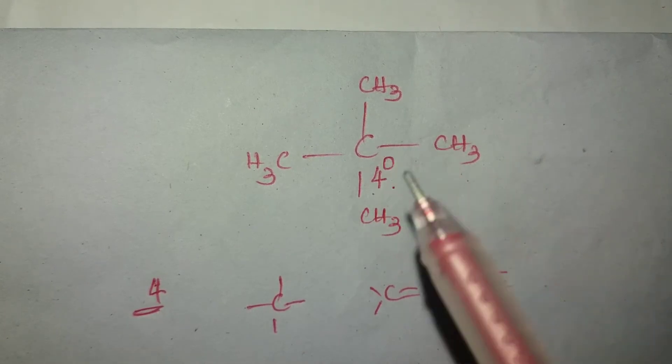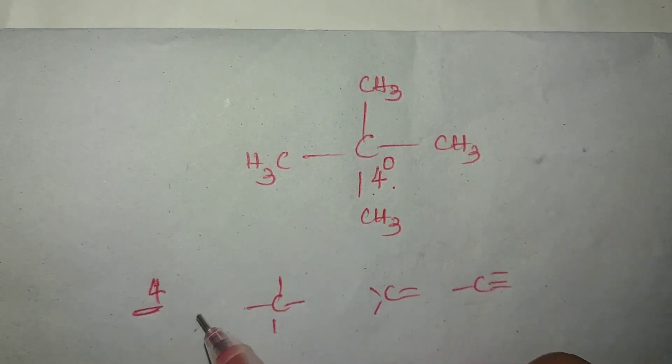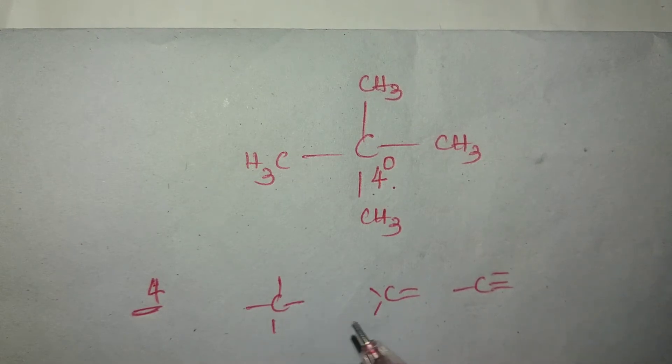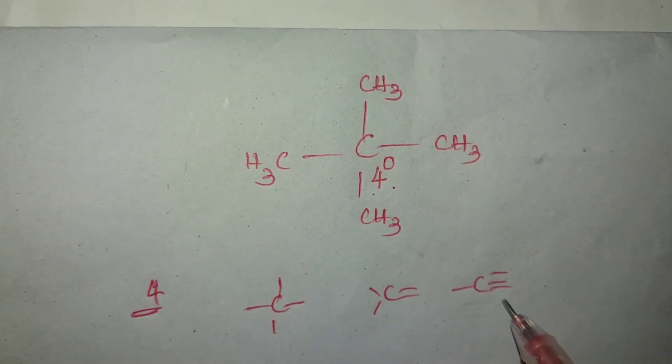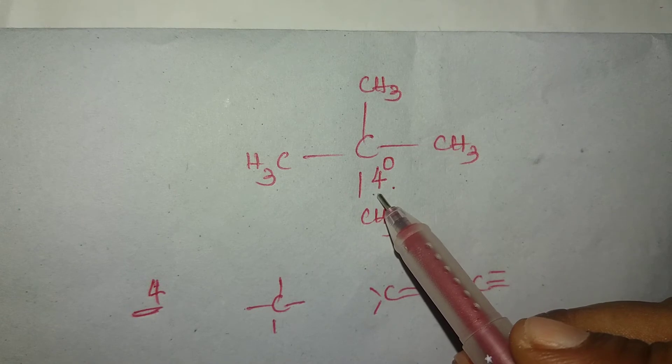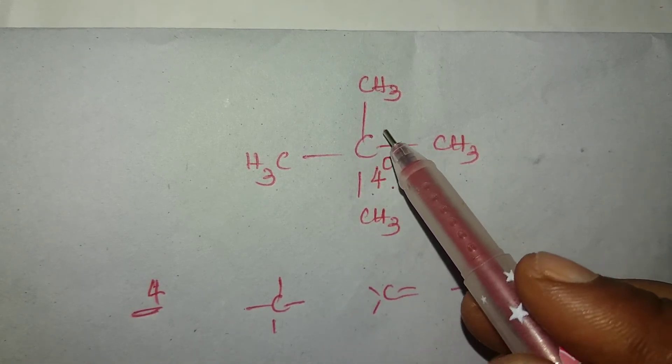The carbon belongs to group four, so its valence is four. That means it may form four single bonds, or one double bond, or one triple bond. Here, this quaternary carbon has four single bonds.